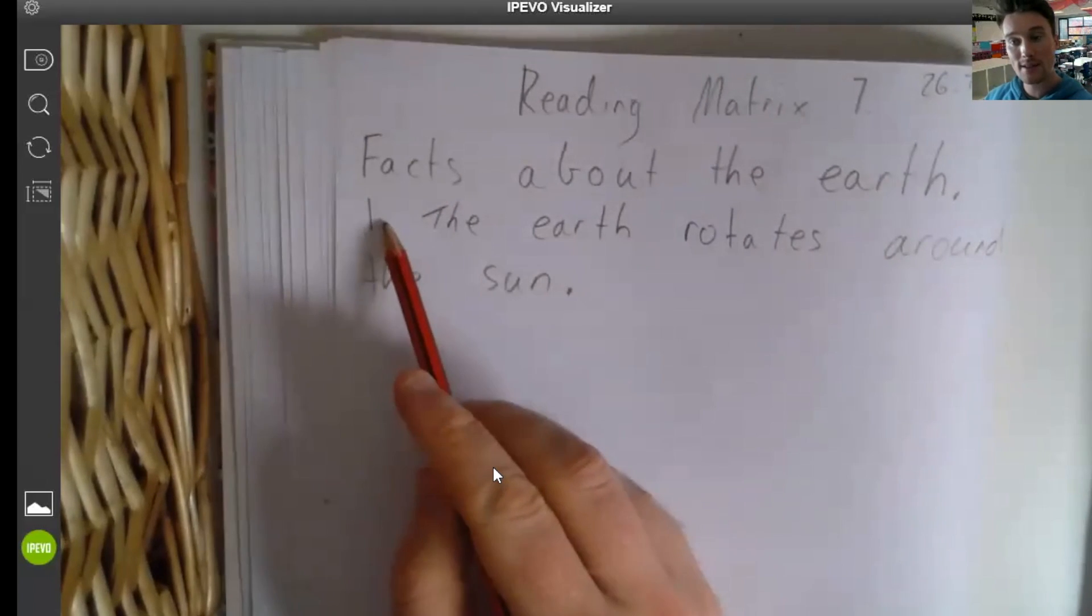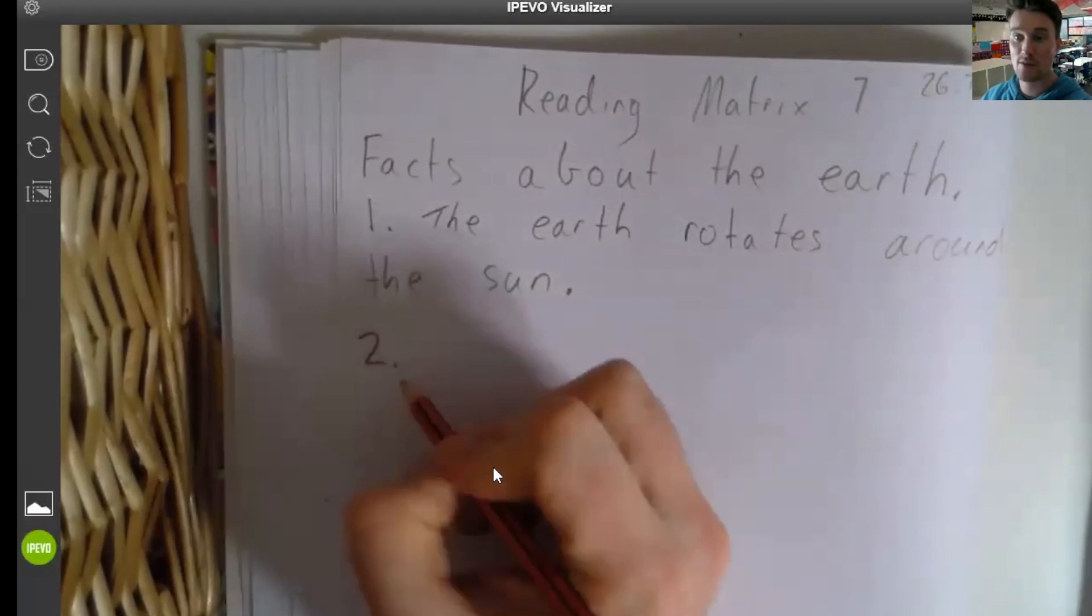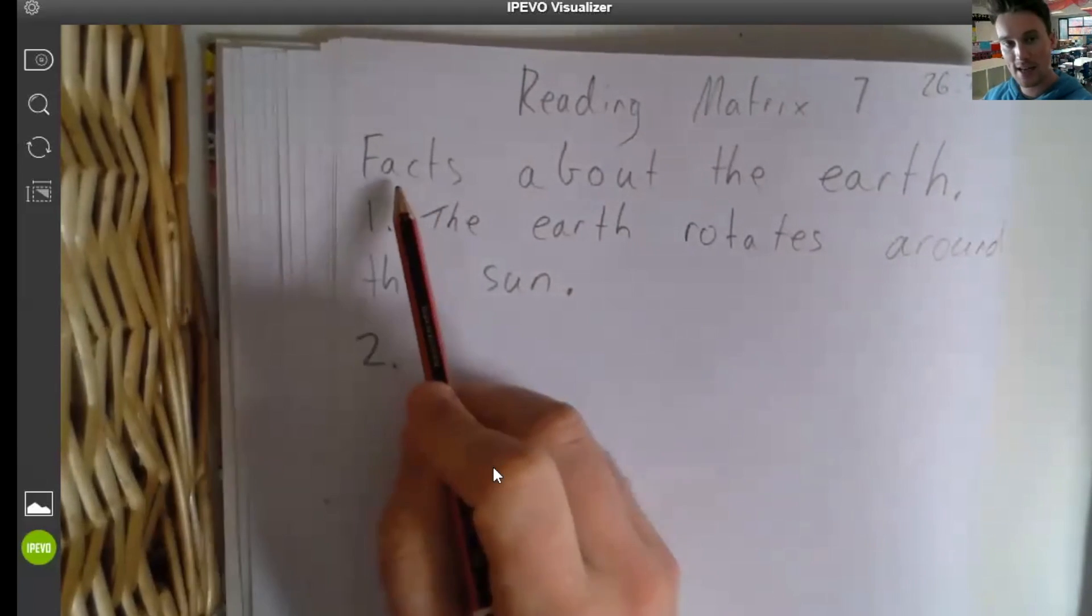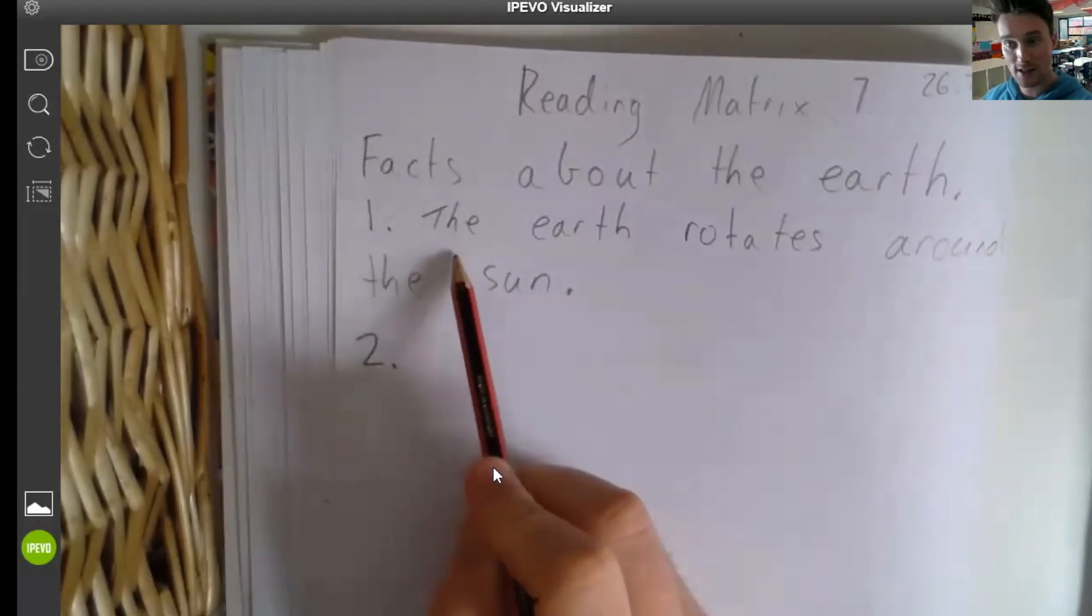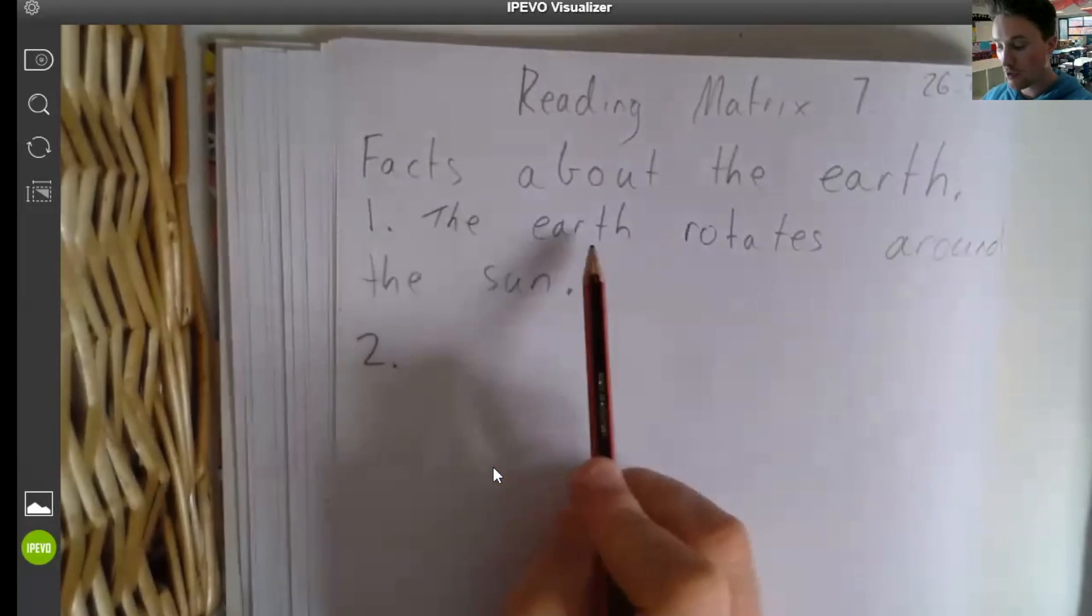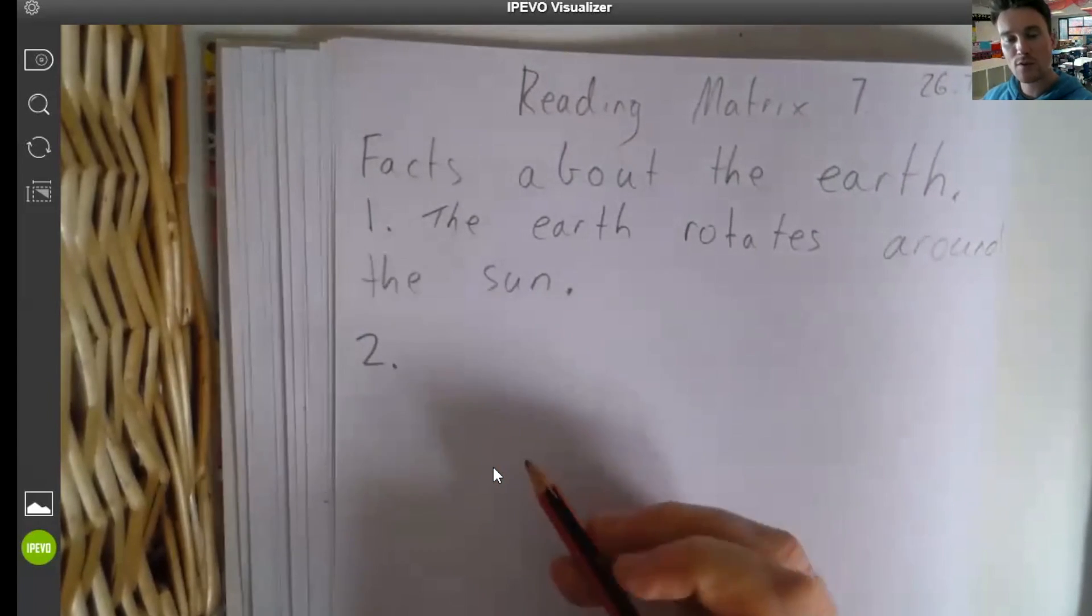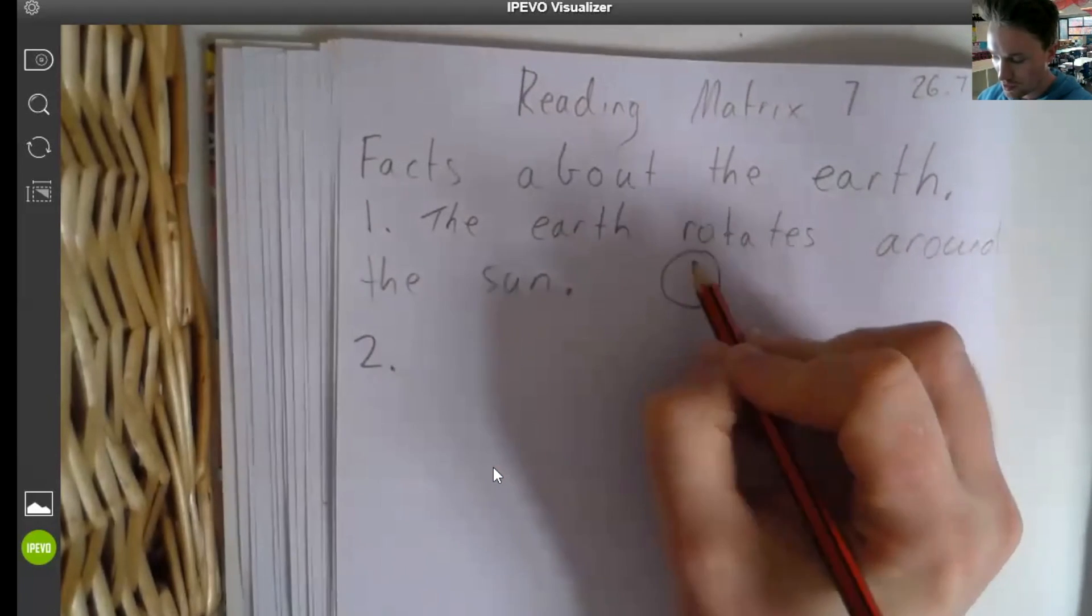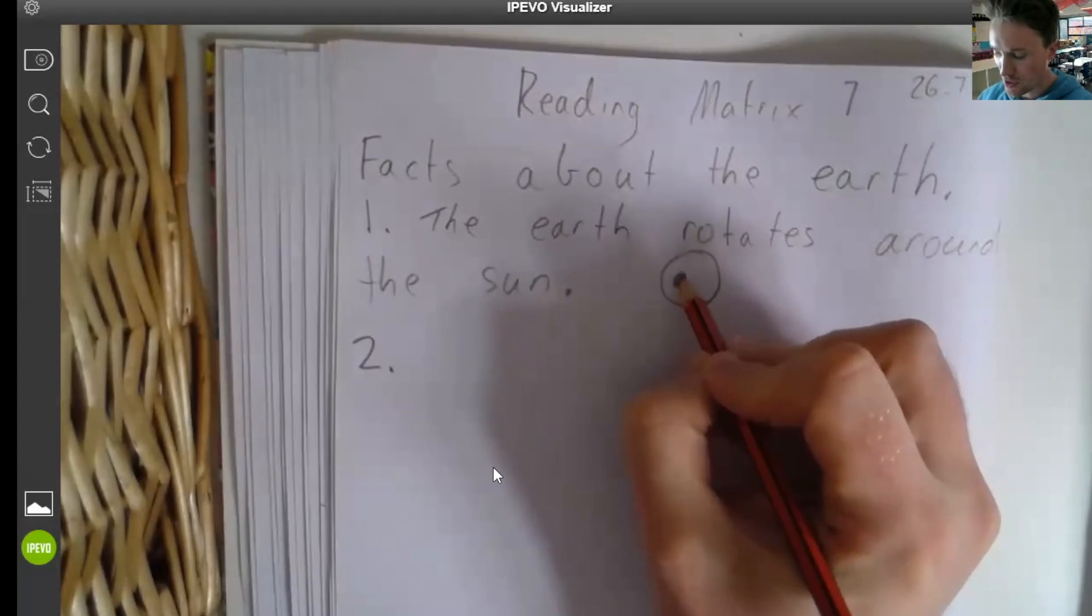I've written a number one because it's our first fact. So after that, we're going to go on to our second fact about the earth. And we know it's facts about earth because we've written a heading, facts about the earth. So the first fact about the earth we've written down, the earth rotates around the sun. Now, if you wanted to really make sure that you remember all of this, you could draw a circle. You could draw a sun. Now, if we go back to the picture, have a look.